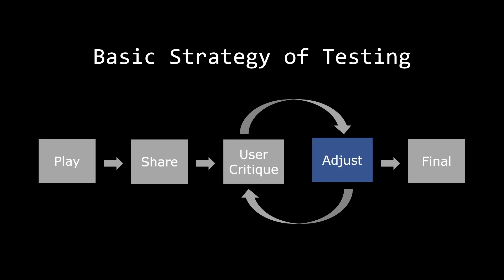Once you have feedback, implement changes to your game based on it. Then have your testers test the newest iteration of your game. This is the feedback loop — you get user critique, implement changes, and give the updated game back to your testers for more feedback. Continue doing this until your users give back a majority of positive feedback, then move on to finalizing the game. Testing is an iterative process where you test, adjust, and repeat until satisfied.